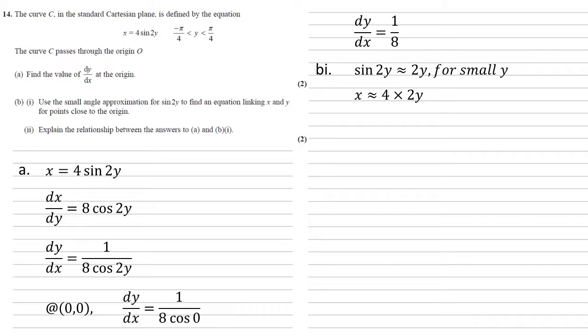We know that x equals 4 sine 2y, so replacing that with 2y, we get that x is approximately equal to 4 times 2y, which is equal to 8y.